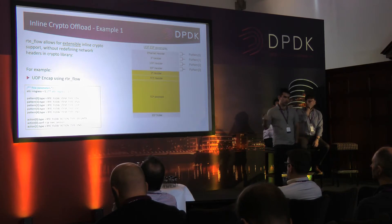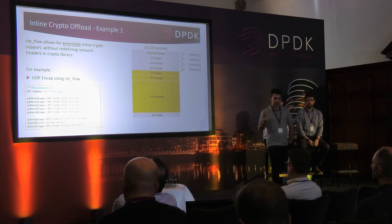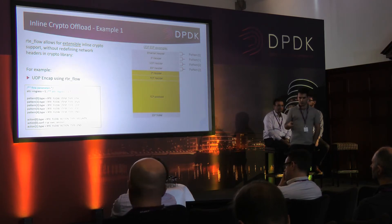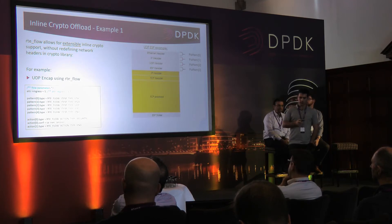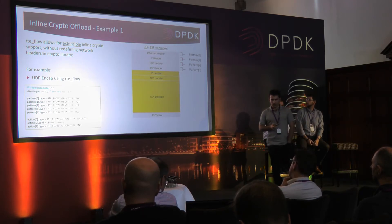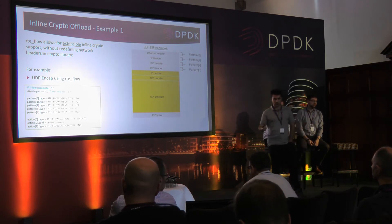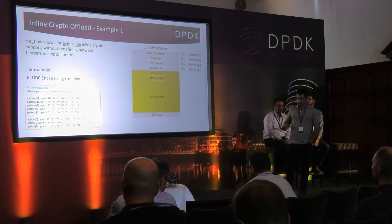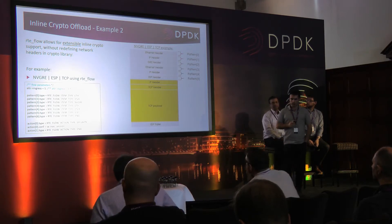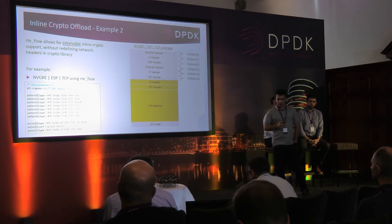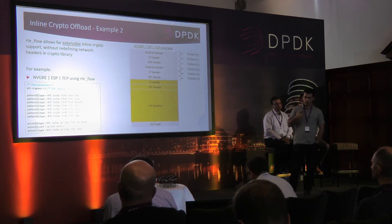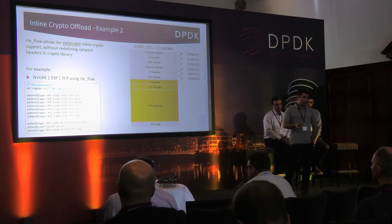A key feature is the extensibility of the flow API, allowing support for new features in the future without modifying the RTE Security library and without adding network headers and definitions in crypto dev related code. For example, for UDP encapsulation of ESP, the only required change is adding the UDP pattern in the RTE Flow configuration, provided hardware and PMD support it. Another more advanced example is ESP encapsulated in GRE — we configure both the IP GRE pattern and the IP ESP pattern, providing both to hardware and performing crypto offload on the payload.